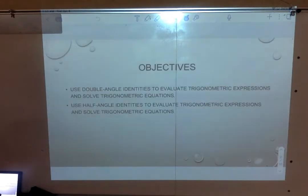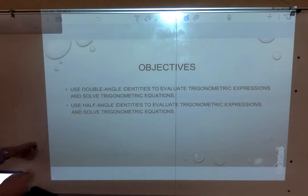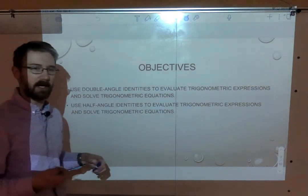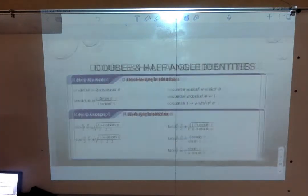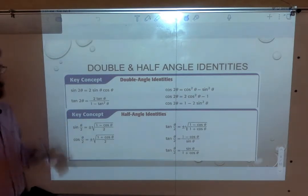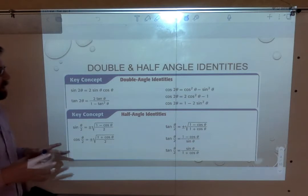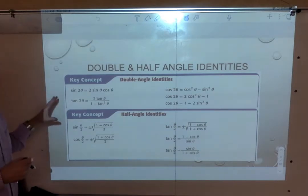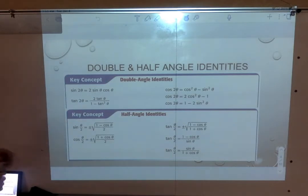We're going to be using double angle and half angle identities to evaluate trig expressions as well as solve trig equations. Here are our new formulas. Take a moment, pause the video, jot these down, and have them next to you while you're watching the video, trying the examples, and doing the homework problems. We're also going to need our unit circle, so have that out as well. If you're having trouble seeing this on the video, take a look on Canvas on the note key — you'll be able to see it more easily.